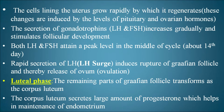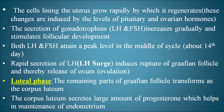The secretion of gonadotropins like LH and FSH increases gradually and stimulates follicular development. Both LH and FSH attain a peak level in the middle of the cycle, around day 14. The rapid secretion of LH, also called the LH surge, induces rupture of the Graafian follicle, thereby causing ovulation — the release of the ovum.